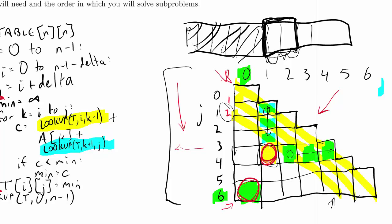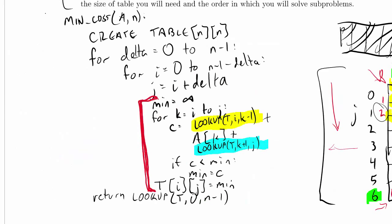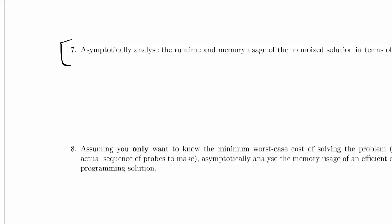So, our memoized approach takes order n cubed time. And it has to keep that whole table around. Each entry in the table takes constant space, the way we think of it. And so, overall, it takes n cubed time and n squared space. And these are actually theta estimates.